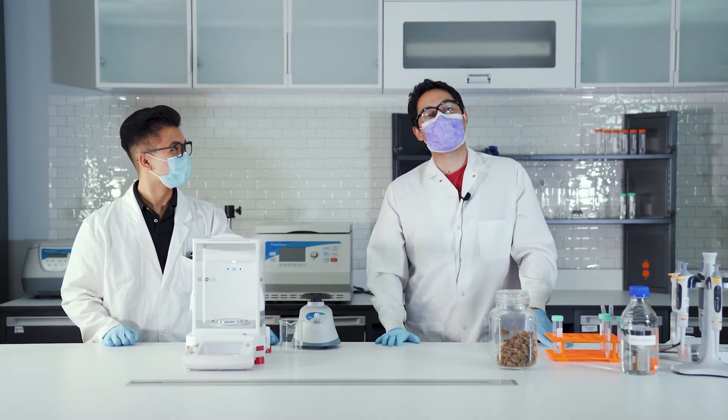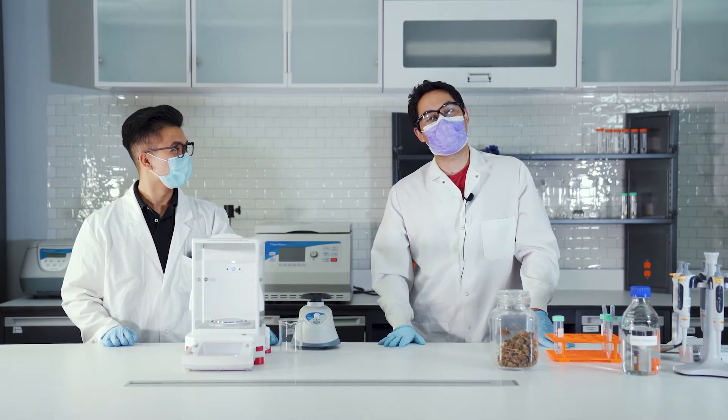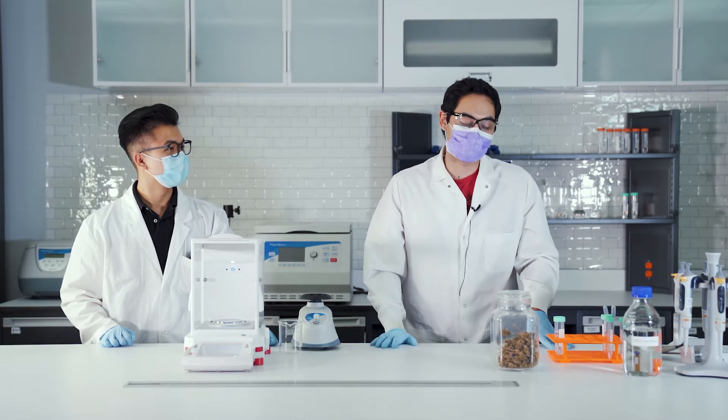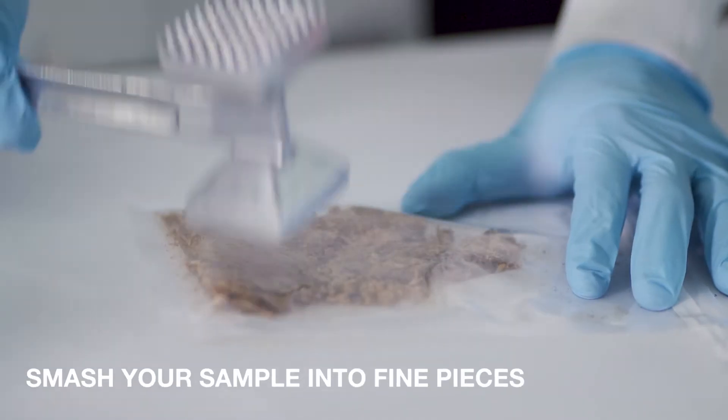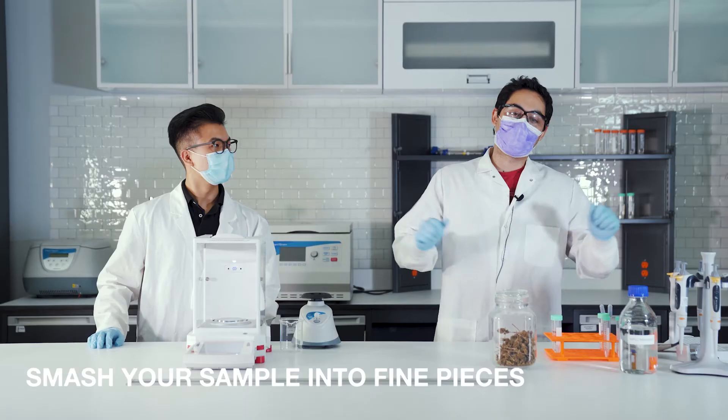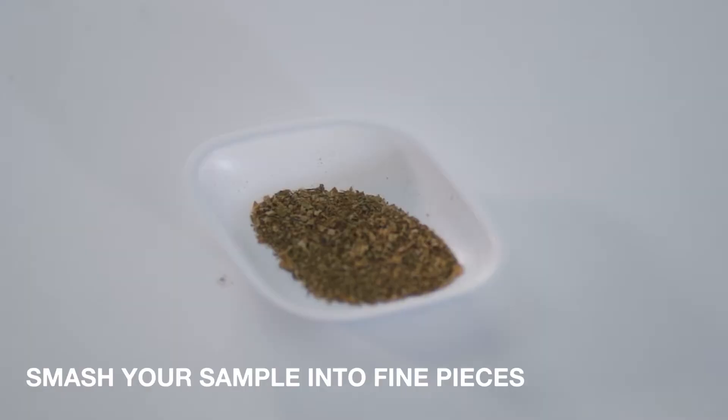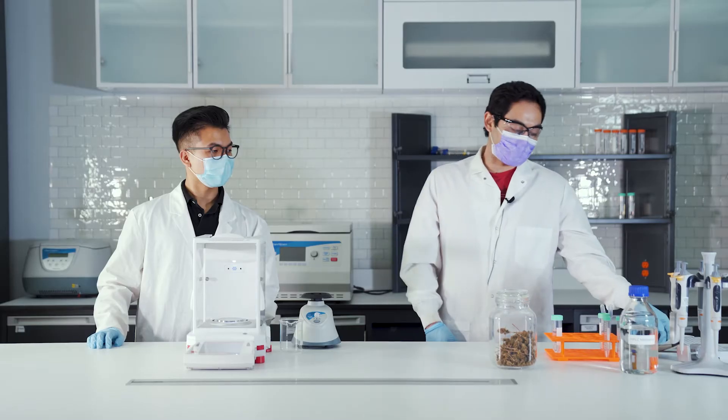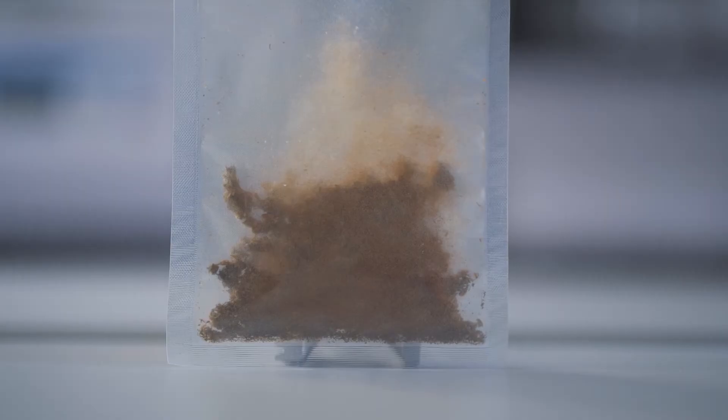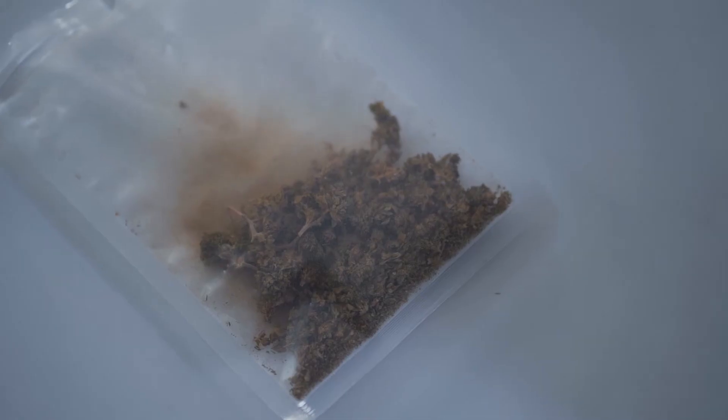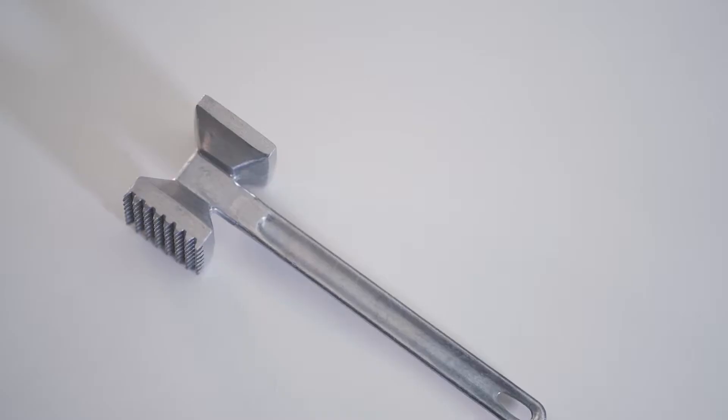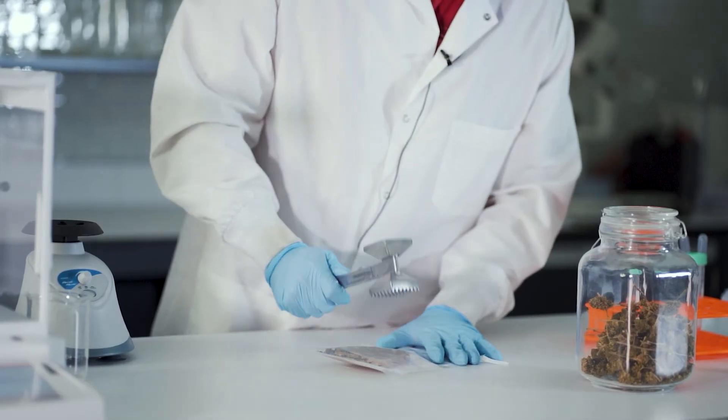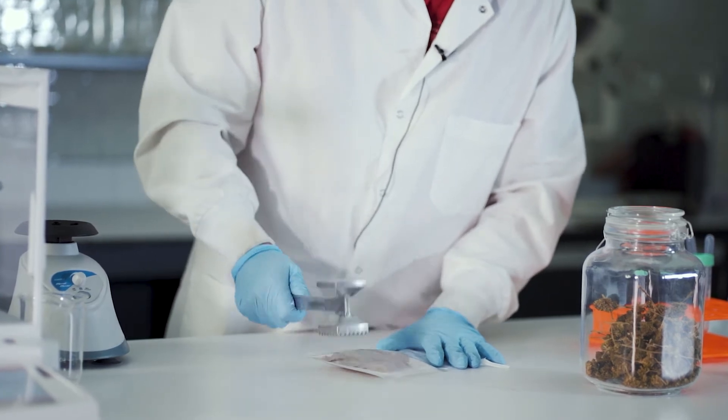The first thing you would want to do when testing for cannabis is you'd want to homogenize your sample. That means you want to smash it into little pieces so no matter what you sample, it's a good representative sample of the batch. What we've done here is you can take a bag, put sample in there, freeze it, and then if you have a mallet you can smash it up until you get a nice fine powder.